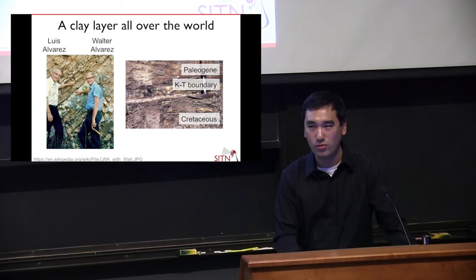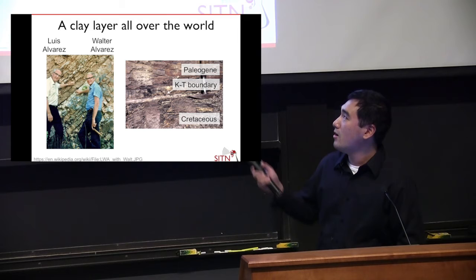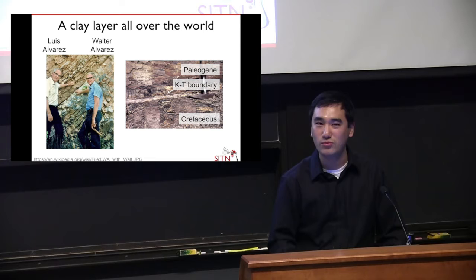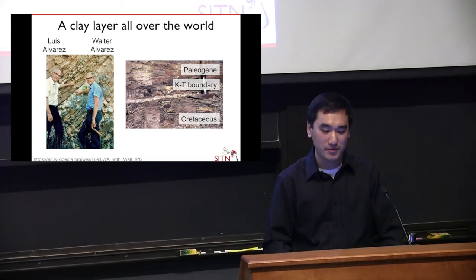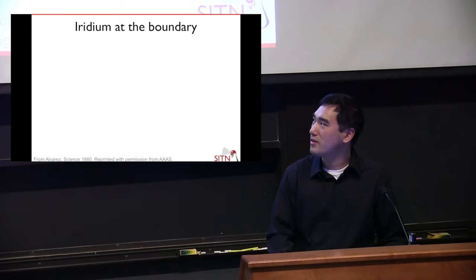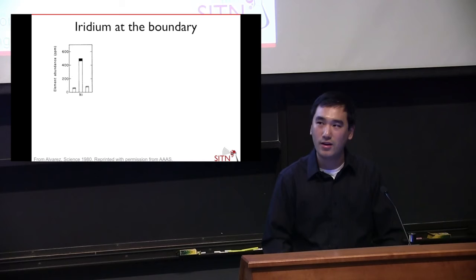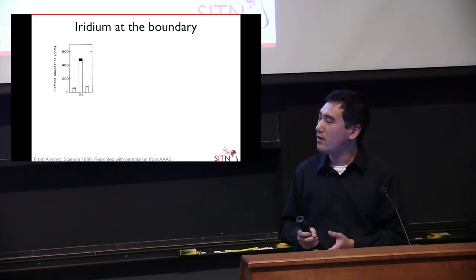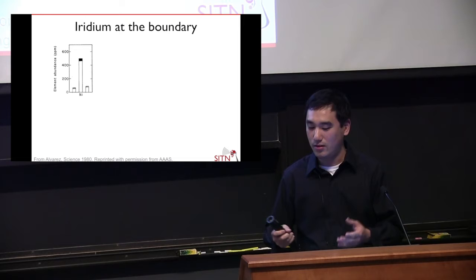Walter asked his father to analyze rock samples from before the dinosaurs died out, after, and right at the point when they died out. His father ran them through his instruments and found a couple of things: nickel, zinc, and cobalt — all with notably more present at the time the dinosaurs died out, though he didn't know what to make of it yet. But then there was iridium: no iridium before or after the dinosaurs died out, but a huge amount of it right at that boundary layer.